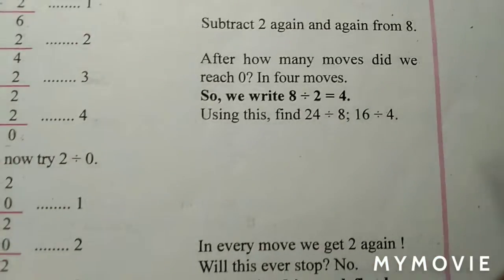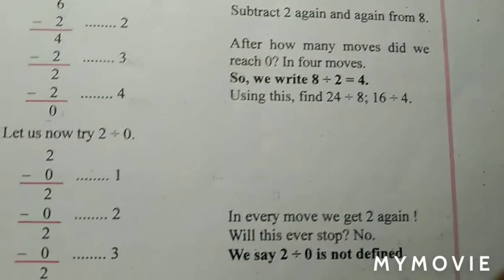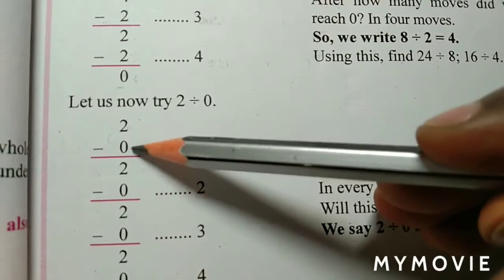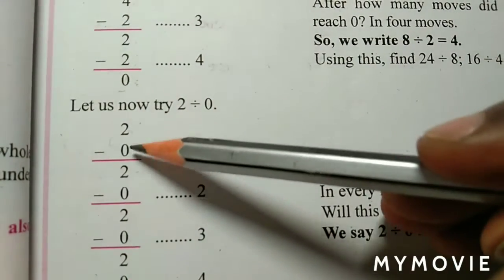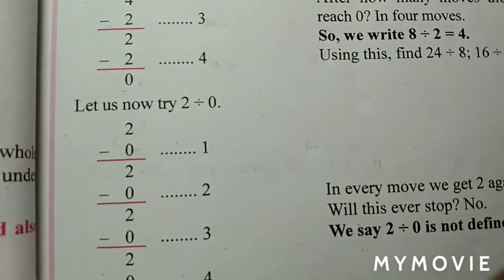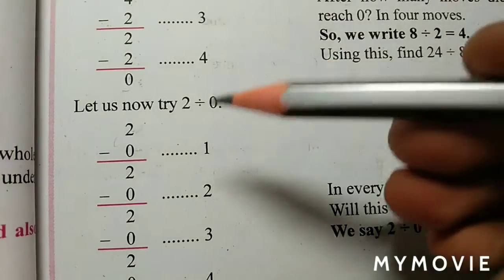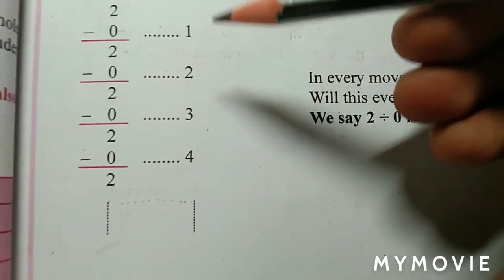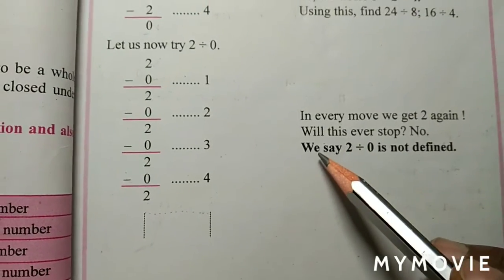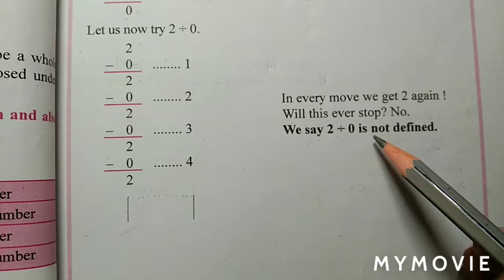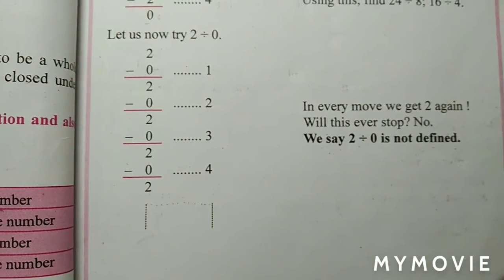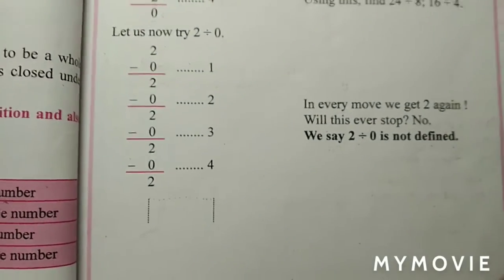अभी देखो, हम 0 से कोई भी number को divide करेंगे — 2 को 0 से divide करो तो 2 minus 0 करते रहो, हर बार उसी number ही आता है, कभी zero नहीं आएगा। So we can say that 2 divided by 0 is not defined — इसका solution कभी नहीं निकाल सकते हैं।